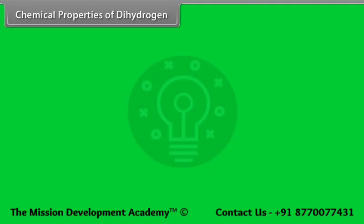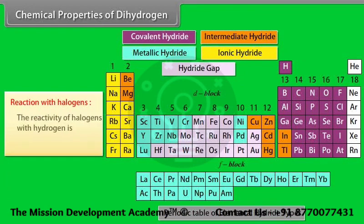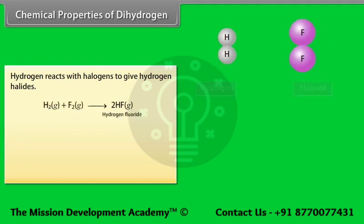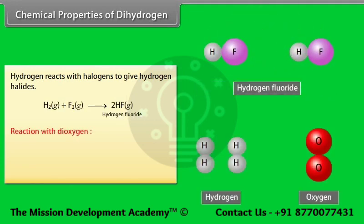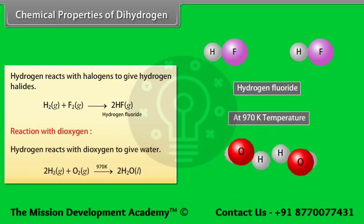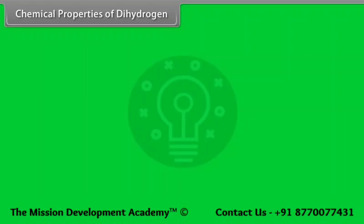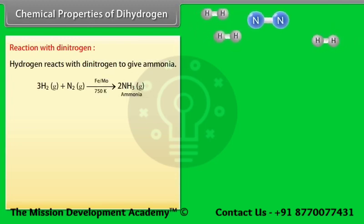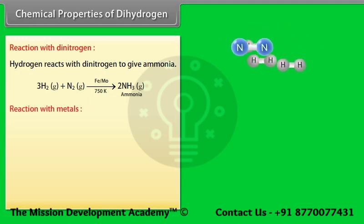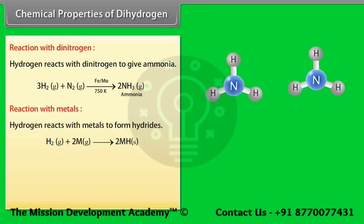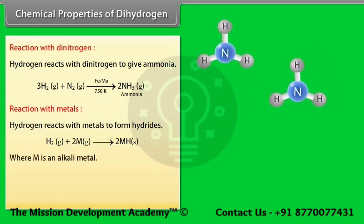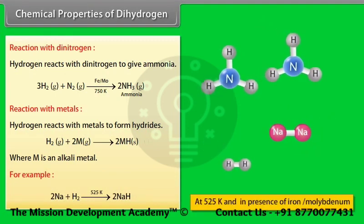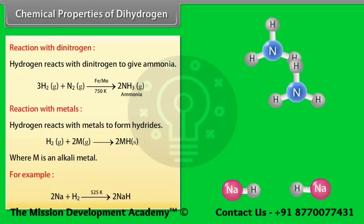Chemical properties — Reaction with halogens: The reactivity of halogens with hydrogen follows the order: fluorine > chlorine > bromine > iodine. Hydrogen reacts with halogens to give hydrogen halides. Reaction with dioxygen: Hydrogen reacts with dioxygen to give water. Reaction with dinitrogen: Hydrogen reacts with dinitrogen to give ammonia. Reaction with metals: Hydrogen reacts with metals to form hydrides, where M is an alkali metal. For example: 2Na + H₂ → 2NaH at 525 K.